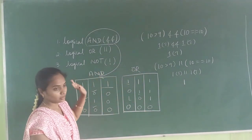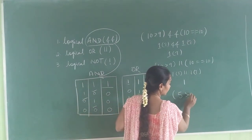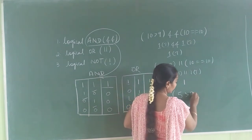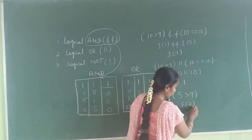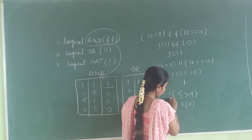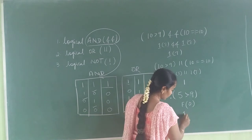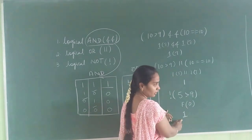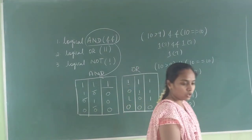For the NOT operator, consider a single example: 5 greater than 9. The actual answer is false (value 0). So if the NOT operator is applied — NOT(5 > 9) — then the answer we consider is 1, because the NOT operator inverts the result. This is the NOT logical operator.